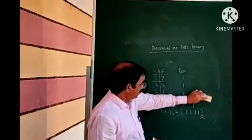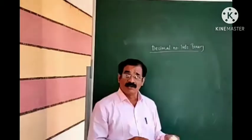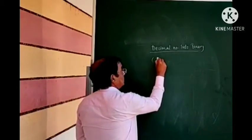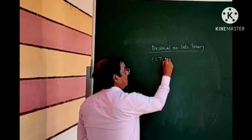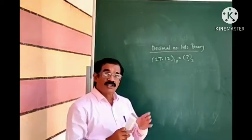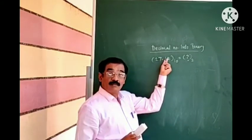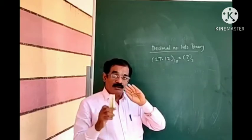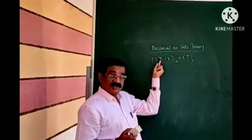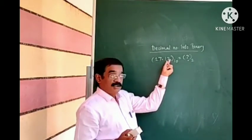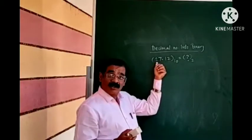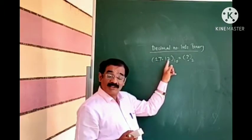For fractional numbers, the method is different. For the integer part, divide by 2; for the fractional part, multiply by 2. The methods are opposite: if the remainder order for the integer part is bottom to top, then for the fractional part the carry order is top to bottom.